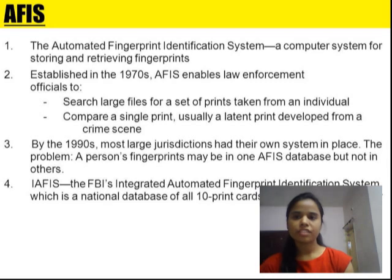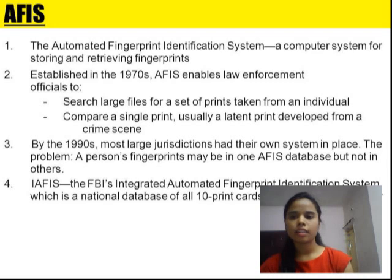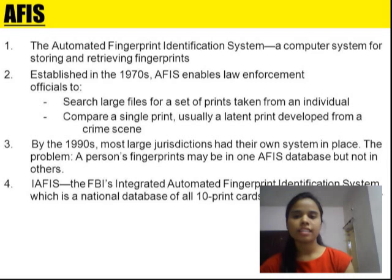AFIS was established in the 1970s. It enables law enforcement officials to search large files for a set of prints taken from an individual and compare a single print, usually a latent print developed from a crime scene. By the 1990s, large jurisdictions had their own systems in place. The problem was that a person's fingerprints might be in one AFIS database but not in another. The Integrated Automated Fingerprint Identification System has the national database of all 10-print cards.